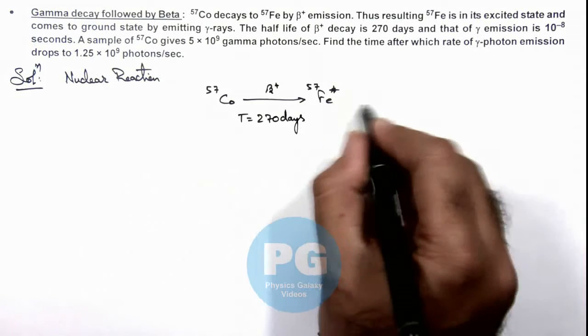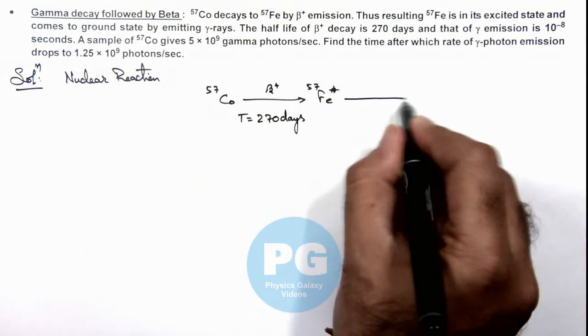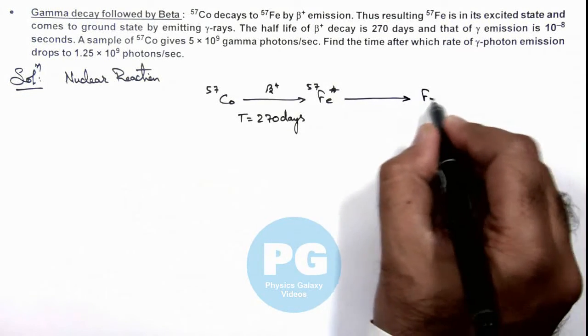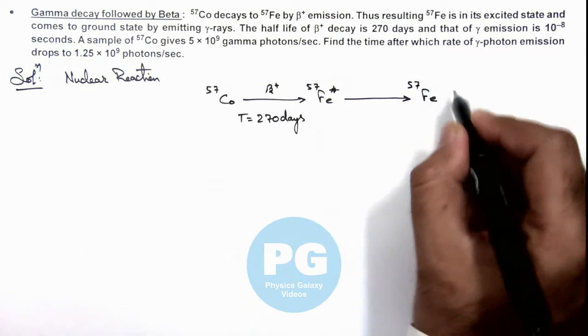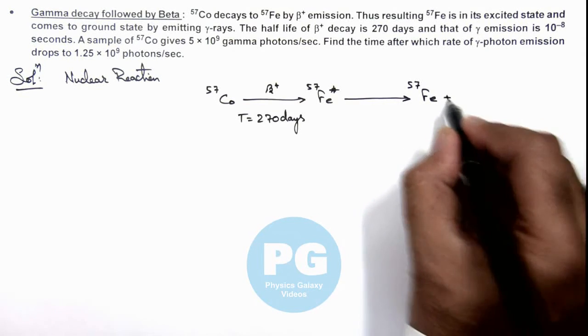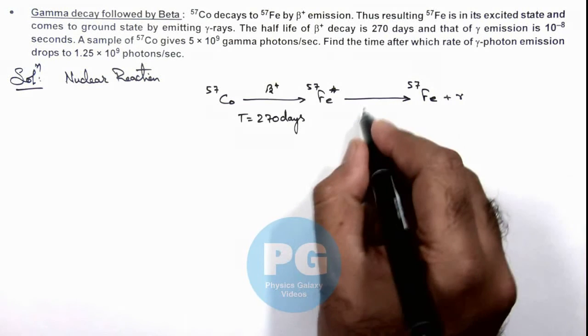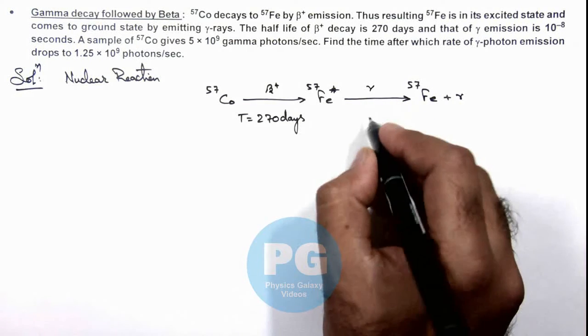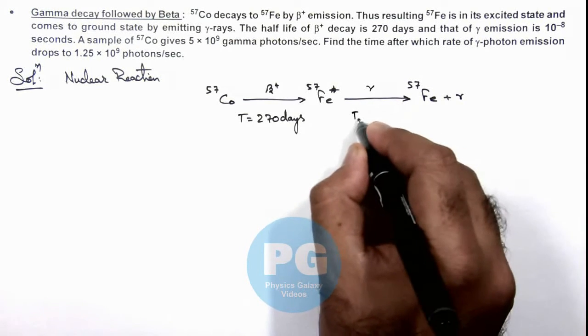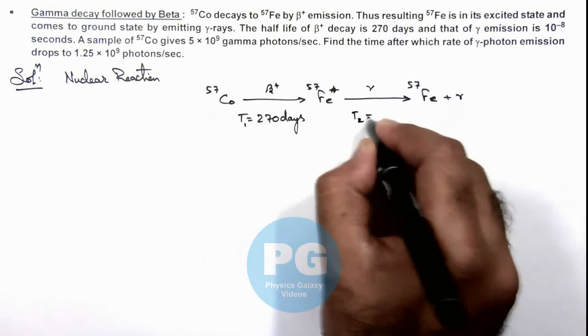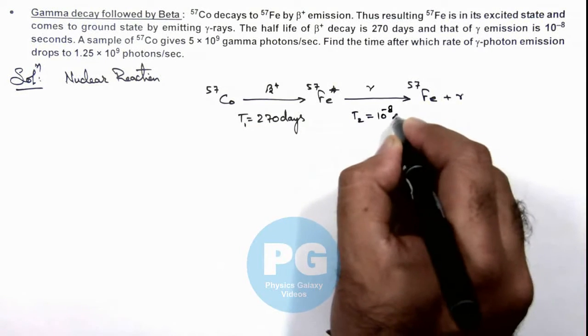Now in a very short time, this excited iron nucleus drops to the normal state of Iron-57 plus it emits a gamma ray. This is the gamma decay, and the half-life here we can write as T2, which is 10 to the power minus 8 seconds.